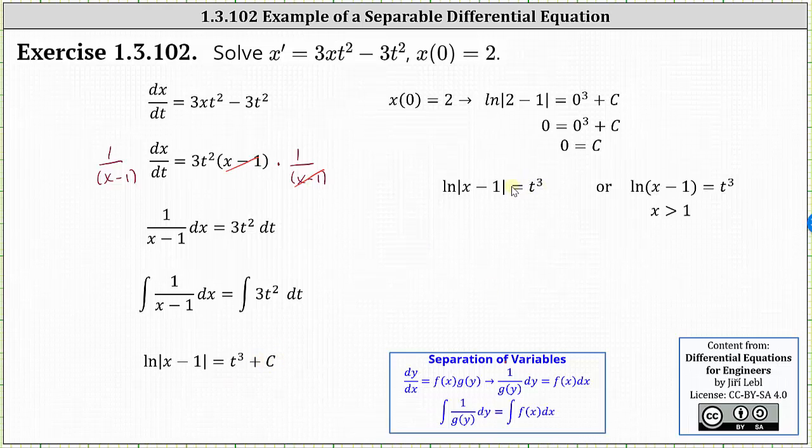We can write the particular solution as natural log of the quantity x minus one equals t cubed, where x is greater than one, since c equals zero.